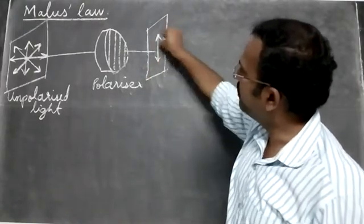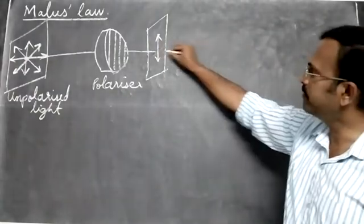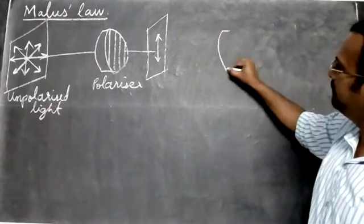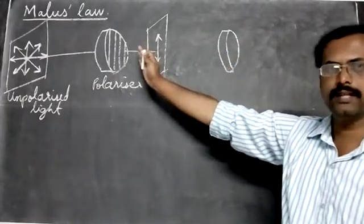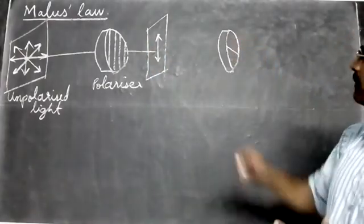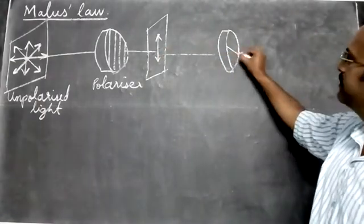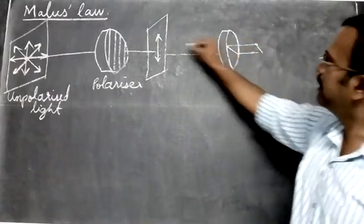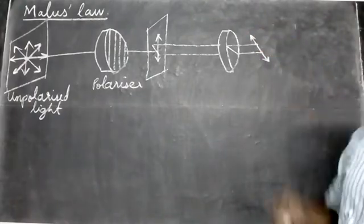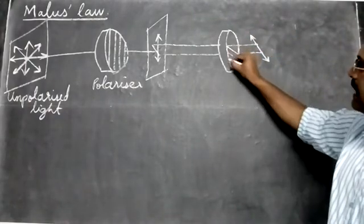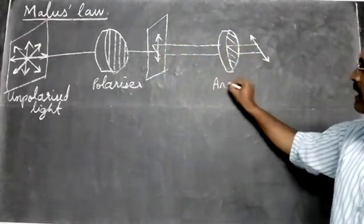The light rays will vibrate only in the linear direction. Now we have an analyzer — the light ray coming from the polarizer will be analyzed by the analyzer. The analyzer is not exactly perpendicular to the polarizer; it is at some angle theta to the polarizer. So the analyzer is like this, at some angle theta.